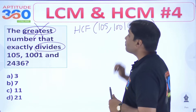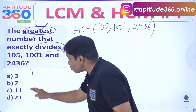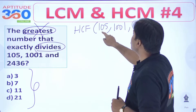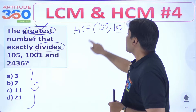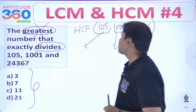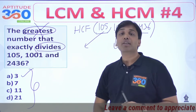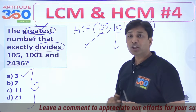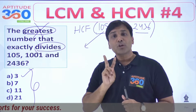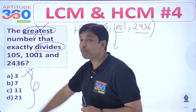If we have to sit in an examination, time is precious. Why not take assistance from the options? For option A (which is 3): 105 - the sum of digits is 5+1=6, which is divisible by 3. 105 divided by 3 gives 35. But for 1001, the digit sum is 2, which is not divisible by 3, and hence 3 cannot be the HCF of these numbers. This option is eliminated.